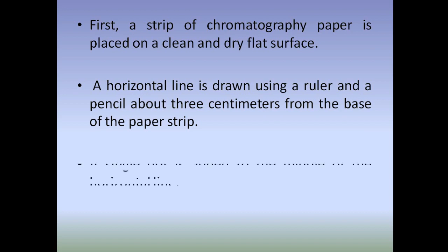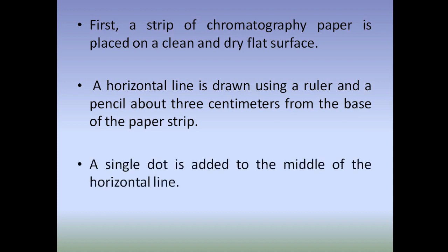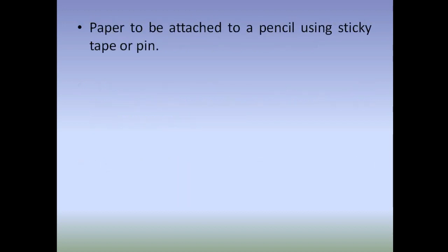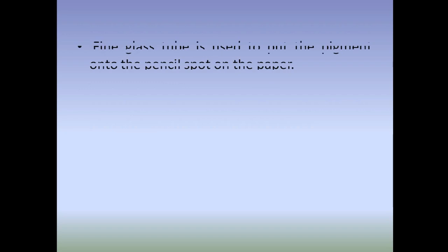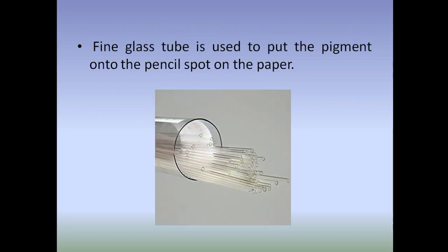The reason for using a pencil is that the line should not smudge because of the solvent. A single dot is added to the middle of the horizontal line. To hold the paper up, the paper is attached to a pencil using sticky tape or a pin. The paper is then lowered into the solvent container — the pencil line should be placed above the level of the solvent.